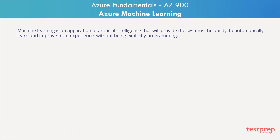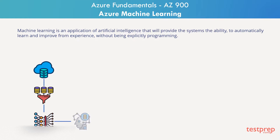Machine learning is an application of artificial intelligence that provides systems the ability to automatically learn and improve from experience without being explicitly programmed. The primary aim is to allow computers to learn automatically without any human intervention or assistance, and then adjust their actions accordingly.